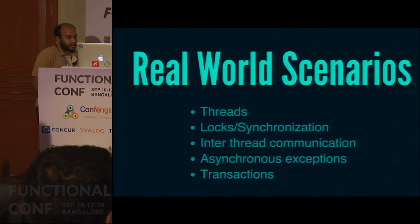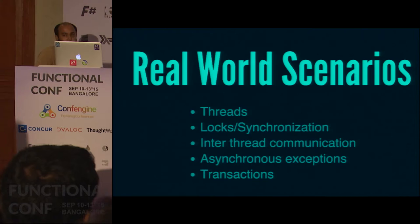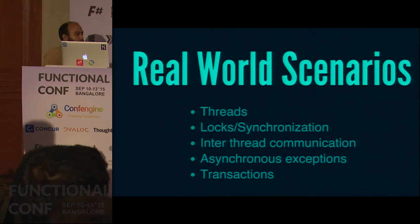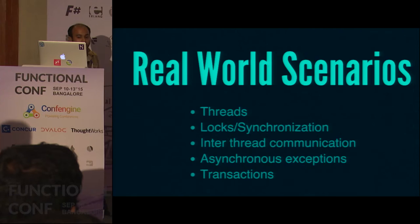Locks and synchronization between threads — you will have some piece of code which are critical sections and you cannot afford to have multiple threads modify those critical sections at the same time. And similarly you would need some way to communicate between multiple threads; you may have a worker thread and a master thread, and when the worker thread is done it should notify the master thread with the result of the calculation.